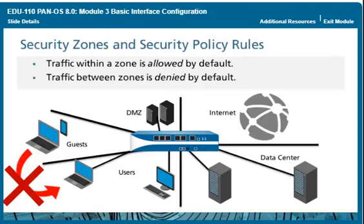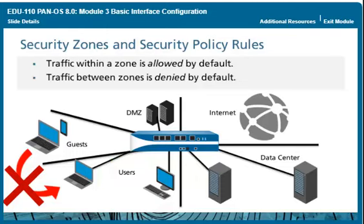Zone names have no predefined meaning or security policy associations. Choose descriptive zone names that help designate specific types of business functions, locations, or access privileges — for example, DMZ, Internet, Data Center, Users, and Guest. By default, PAN-OS security policy allows intra-zone traffic, so systems in the same zone can freely communicate. However, inter-zone traffic is denied by default. For example, a server in the DMZ zone cannot communicate with a server in the data center zone unless you explicitly create a security policy rule that allows it.